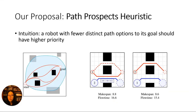We propose a new heuristic for determining a priority order: the path prospects heuristic. We look at a robot and ask how many distinct path options it currently has for reaching its goal. The left diagram shows what I mean by distinct path options, but I'll formalise this later. It's intuitive that we should allow robots with fewer options to have higher priority.